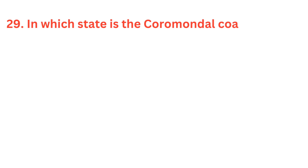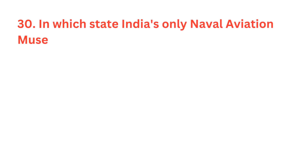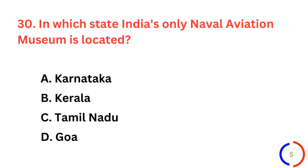In which state is the Coromandel coast located? The correct answer is option C, Tamil Nadu. In which state is India's only naval aviation museum located? The correct answer is option D, Goa.